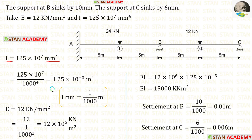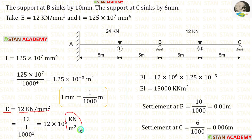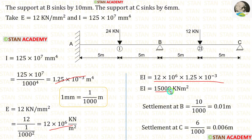The moment of inertia I is given in mm⁴, so we need to convert it to m⁴. Since 1 mm = 1/1000 m and we have power 4, we divide by 1000⁴. For Young's modulus E given as 12 kN/mm², we convert to kN/m² by dividing by 1000². For convenience, multiplying E and I together gives EI = 15,000 kN·m².